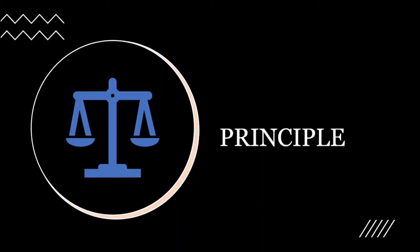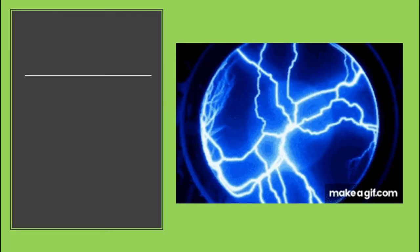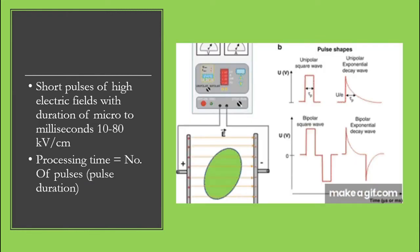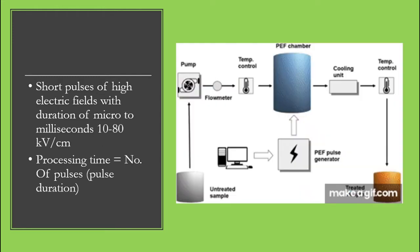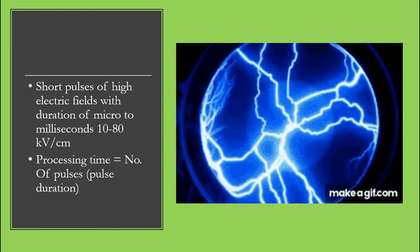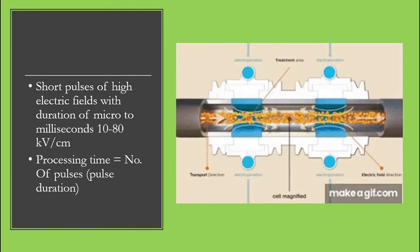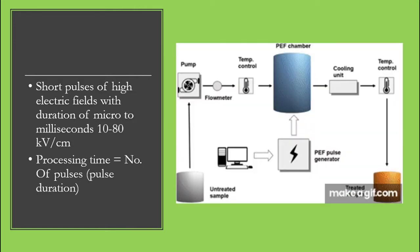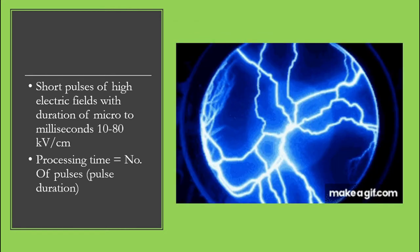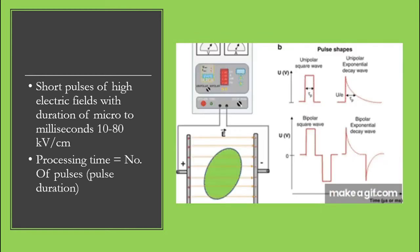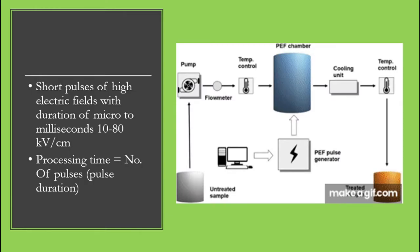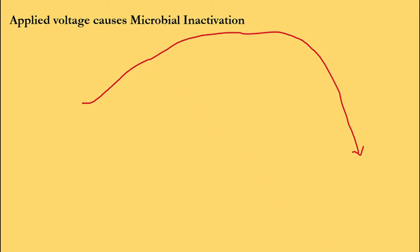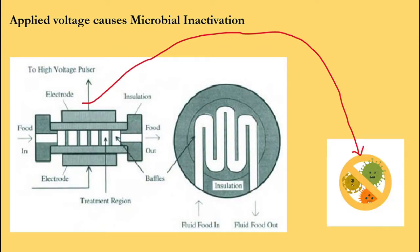Moving to the principle in pulsed electric field, the basic principle of PEF technology is the application of short pulses of high electric field with duration of micro to milliseconds and intensity in the order of 10 to 80 kV per centimeter. The processing time is calculated by multiplying the number of pulses times with effective pulse duration. The process is based on pulsed electric current delivered to a product placed between a set of electrodes. The distance between electrodes is termed as the treatment gap of the PEF chamber. The applied high voltage results in an electric field that causes microbial inactivation.